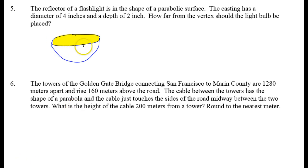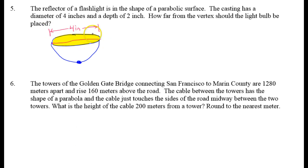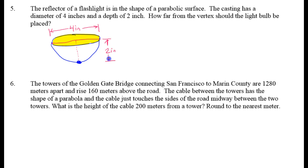Here's my parabolic-shaped part of a flashlight. The casting is like the little part that's shaped like a bowl, and the light bulb is inside of there. They're telling us that the diameter is 4 inches, so that means if I measured from one side to the other, that's 4 inches. They're saying it has a depth of 2 inches — so from the bottom to the top, that's 2 inches.